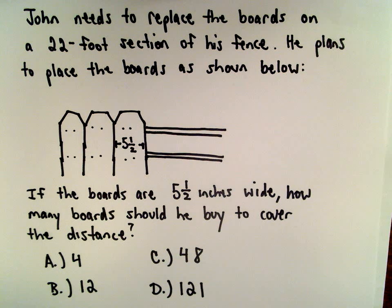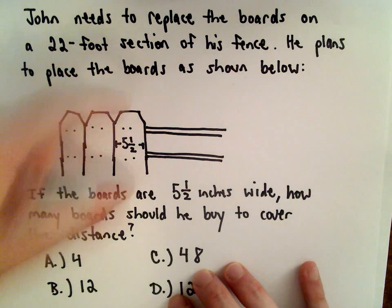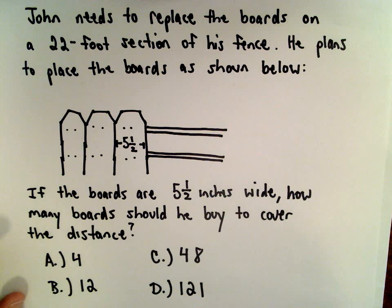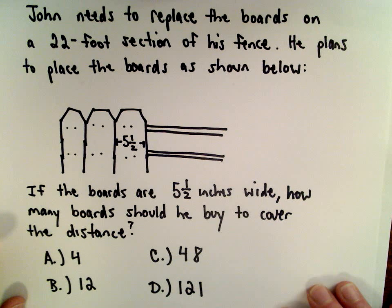John needs to replace the boards on a 22-foot section of his fence. He plans to place the boards right next to each other, and the boards are five and a half inches wide. We want to know how many boards should he buy to cover that distance.